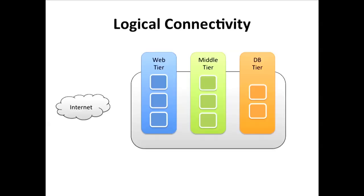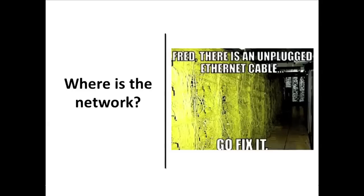The next thing to think about is the logical connectivity. If we have tiers, how do they get connected from a logical perspective? That's usually quite obvious. And at that point, as an application person, I would be done — thinking about IPs, connectivities, how things communicate point to point. The question is: where is the network? What are the additional things happening either due to application requirements or other concerns?